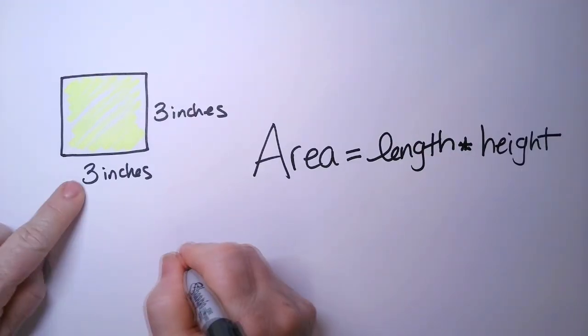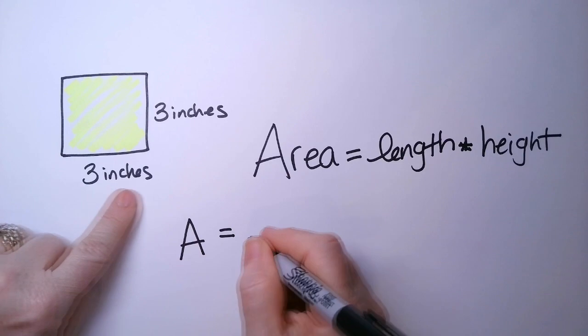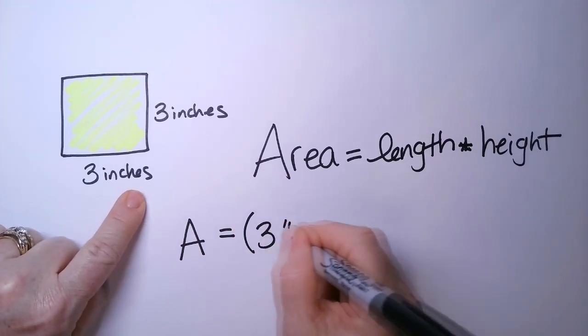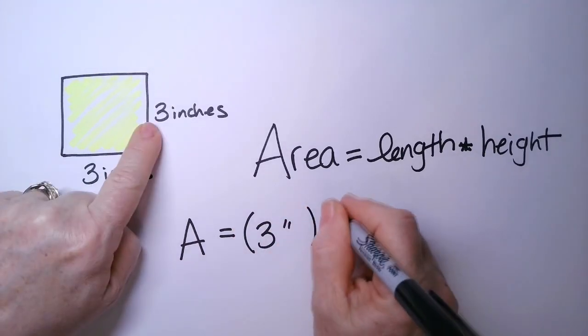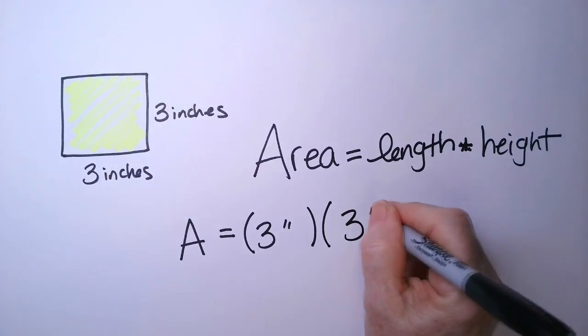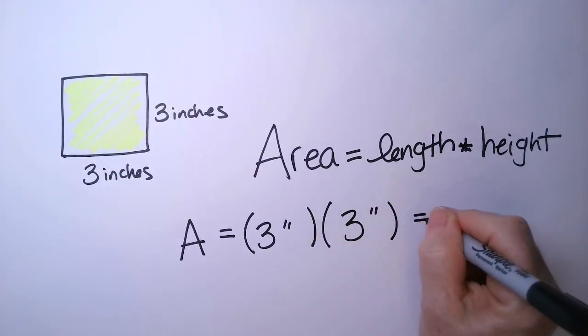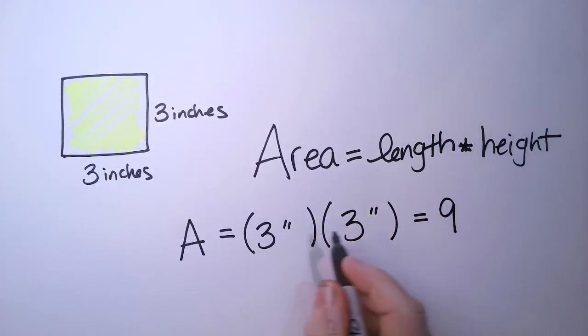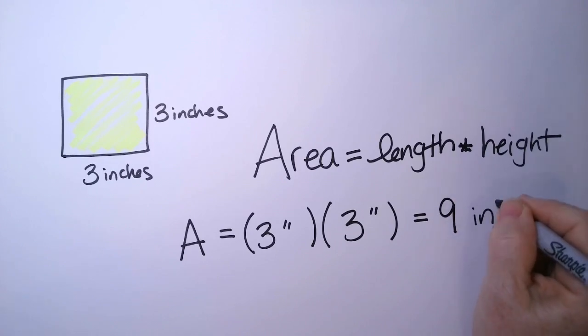So area is length times the height. So my area, we'll call it A, it's going to be the length is three inches. Those little tick marks mean inches. And the height is the same as the length. Three times three is nine inches times inches gives you square inches, and we write it like that with a little two.